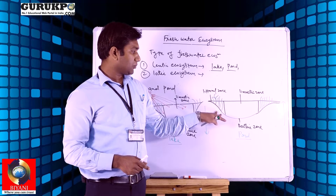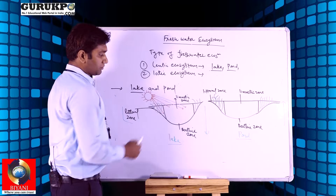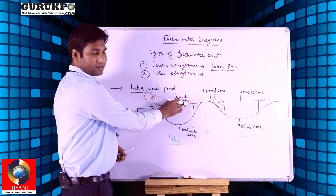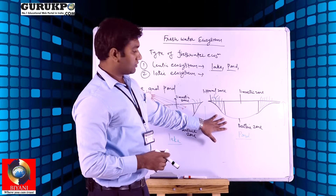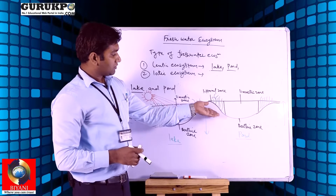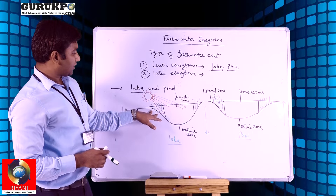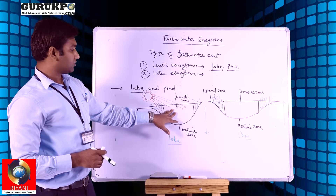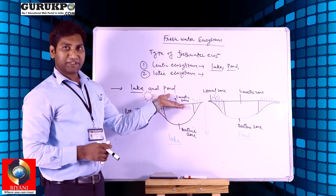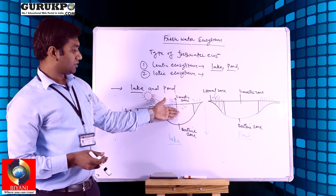In case of a lake, the limnetic zone is more productive. In ponds, rooted plants and phytoplankton are mainly present in the littoral zone. In lakes, rooted plants and phytoplankton numbers are lower in the littoral zone but higher in the limnetic zone. So the difference is mainly on the basis of depth and zonation.